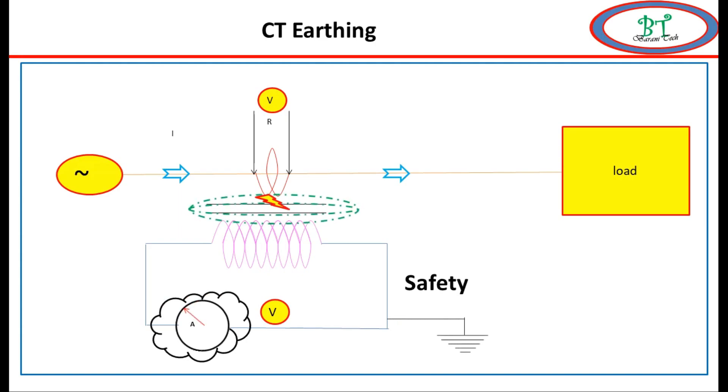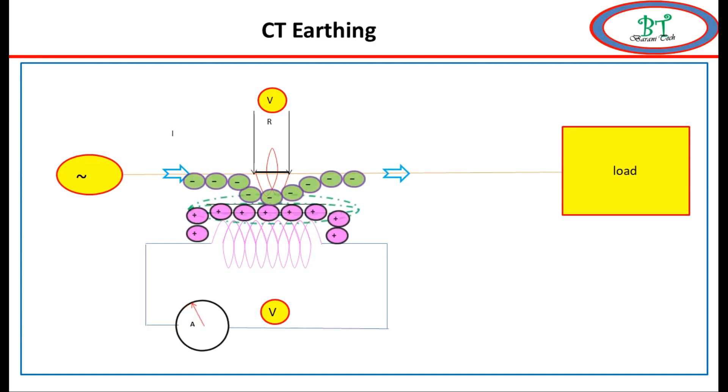The formation of capacitance charge between primary circuit and secondary circuit which causes very high voltage. Normally, the design insulation level will withstand this voltage for that particular system, but to make additional protection we make this earthing.